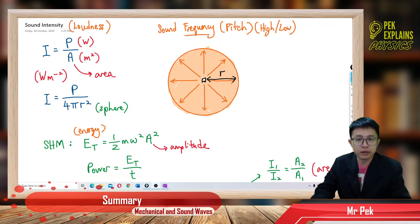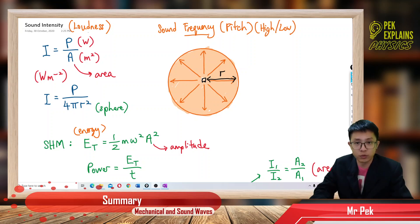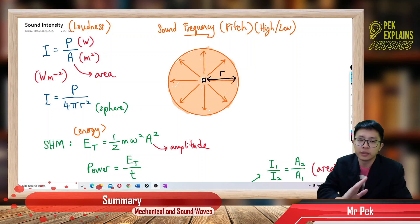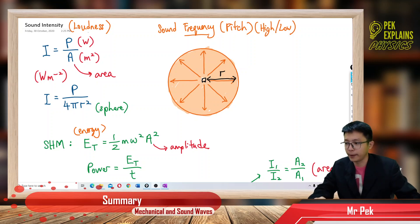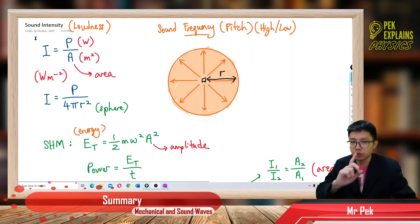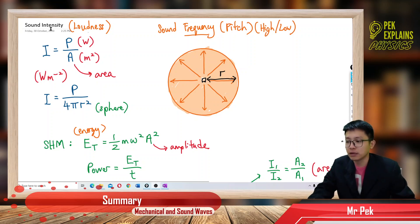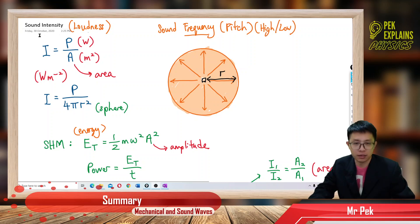Now the third part in mechanical and sound waves — starting from this part is more on sound wave. We want to learn about sound intensity. Sound intensity is actually the loudness of sound.